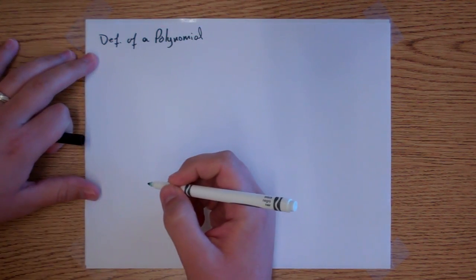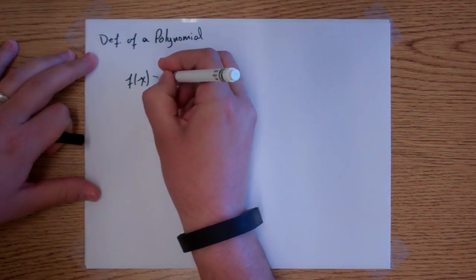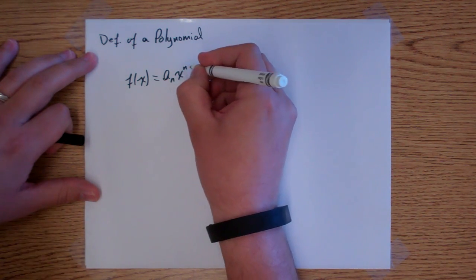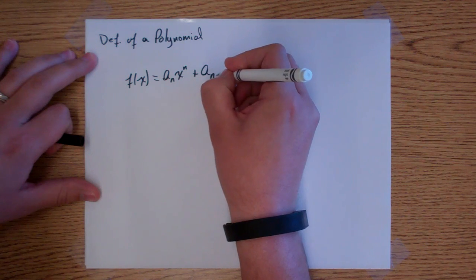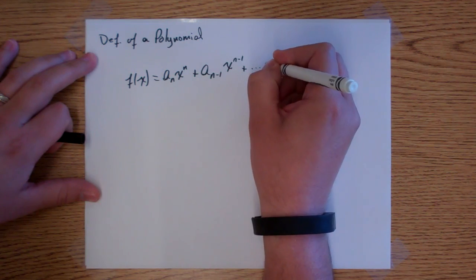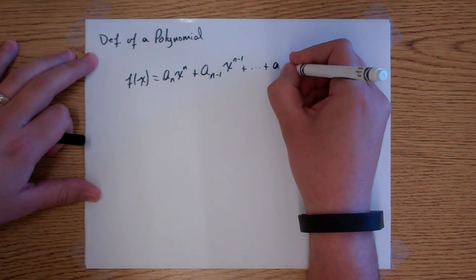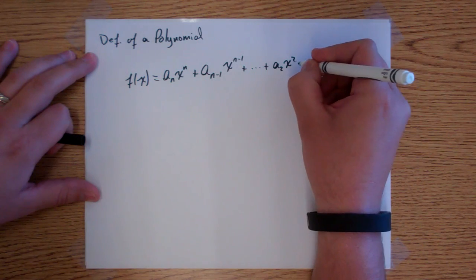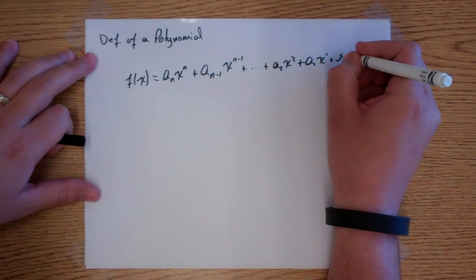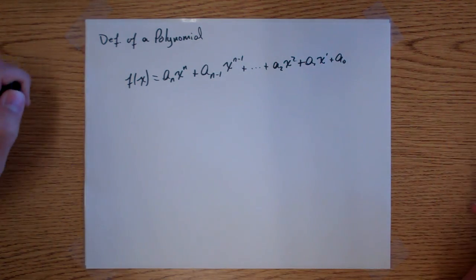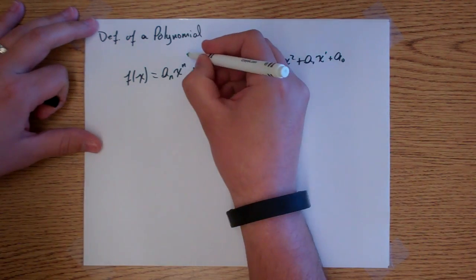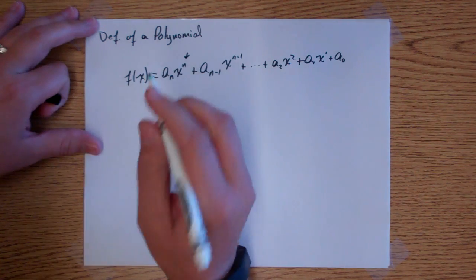The definition of a polynomial is f of x equals a sub n times x to the n, plus a sub n minus 1 times x to the n minus 1, plus dot dot dot, plus a sub 2 x squared, plus a sub 1 x to the first, plus a sub 0. Now, all of these exponents will have to be integers.